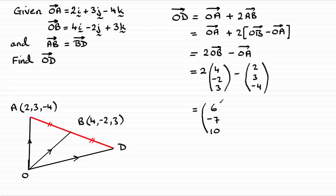You can either leave it like that, or you might want to write it in i's, j's, and k's. So that's going to be six i, I just underline the i's, minus seven j, and then plus the ten k. So hopefully you've been able to see your way through that one.